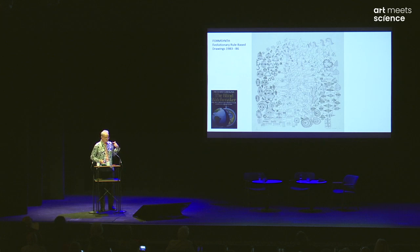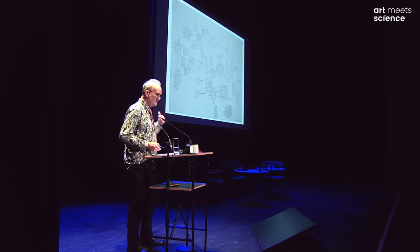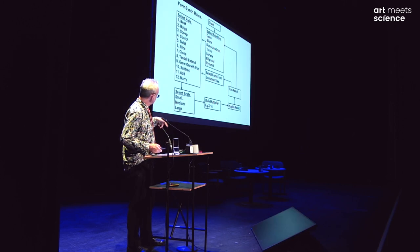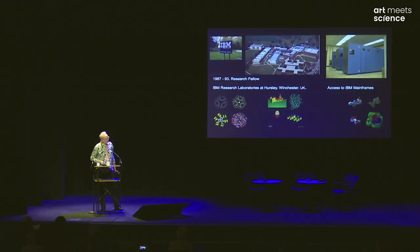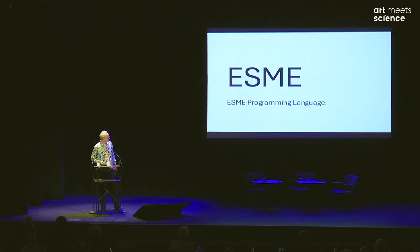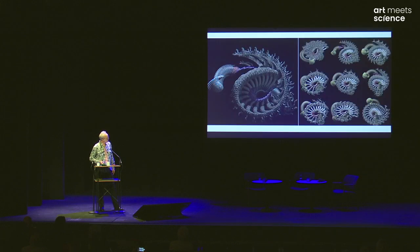A lot of people ask me how my work relates to Dawkins. Our work coincided. He wrote a paper before The Blind Watchmaker that coincided with the form synth drawings I'd been producing as a student — these were evolutionary rule-based systems using my brain as a computer to draw the result of the transformation. I also spent a lot of time in the Natural History Museum when I was at the RCA. Then I became a visiting artist at IBM, where Stephen had just written a new programming language called ESME, which he'd been using for molecular graphics. Off the back of that relationship, all this new work emerged.